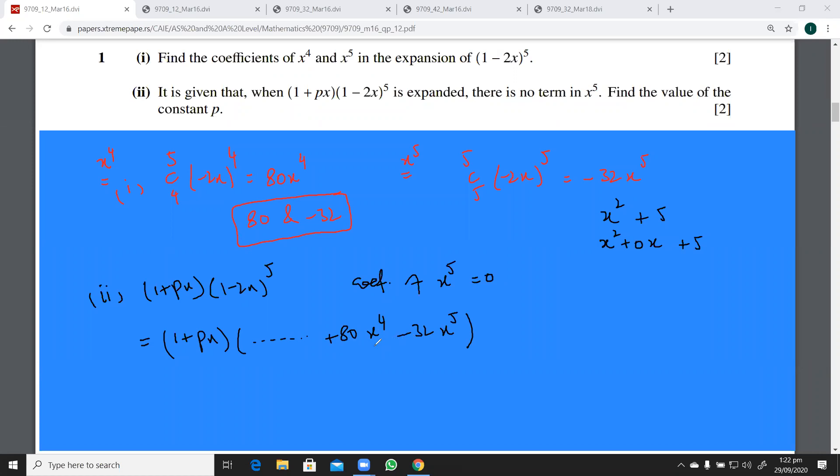in all this expansion, if you multiply 1 with this, you get a term in x⁵. And if px is multiplied by this, you get a term in x⁵ again. So these are the only two products which are required here to find this